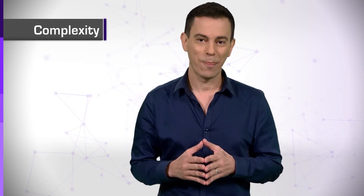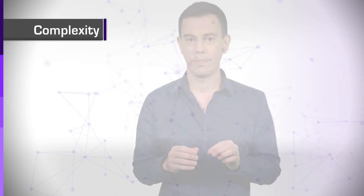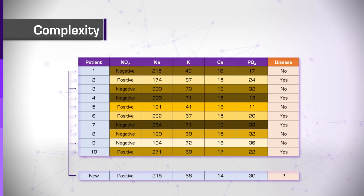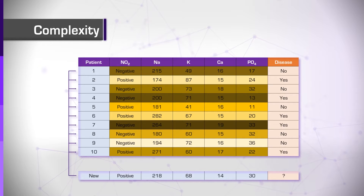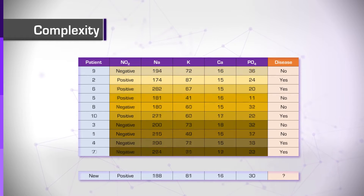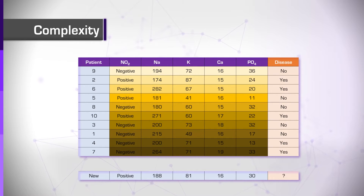Complexity. In its naive implementation, this is a very slow algorithm. Computing the distance of the unclassified data point to all the other data points in the training set could be an exhaustive process. In addition, identifying the k data points with the shortest distance is also quite a complex computation.